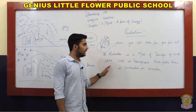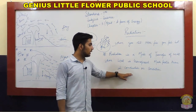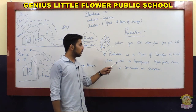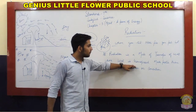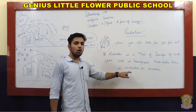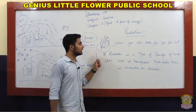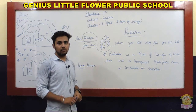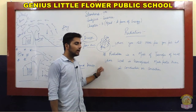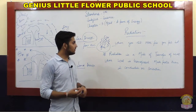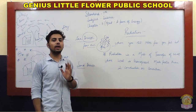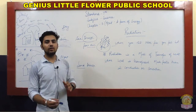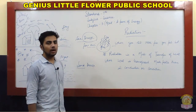Radiation is a mode of heat transfer where heat is transferred much faster than in conduction or convection. It is the fastest because it is a type of light transfer and travels at the speed of light. Radiation means the emission or transfer of heat without any requirement of a medium.